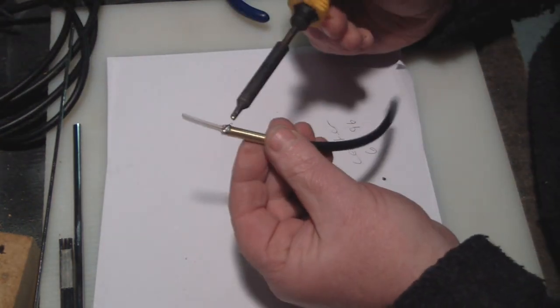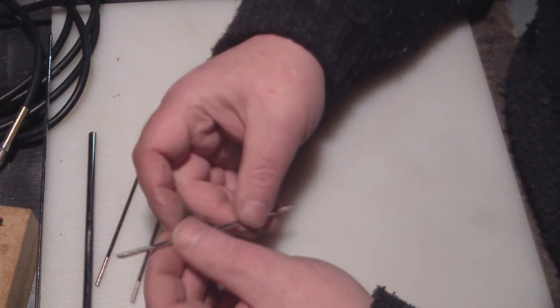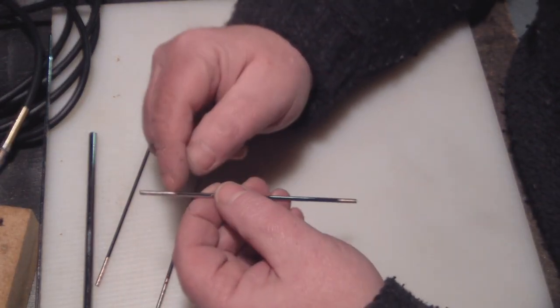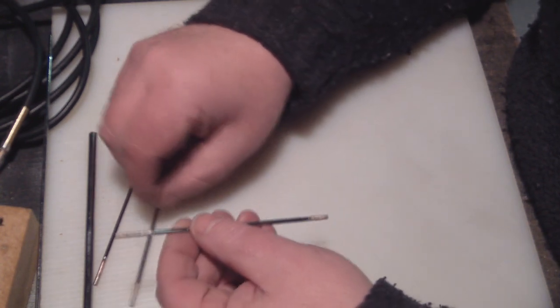And then just tidy up the sides a little bit. What I've done with the rods is I've just ground down the ends so we've got a nice surface to solder onto.